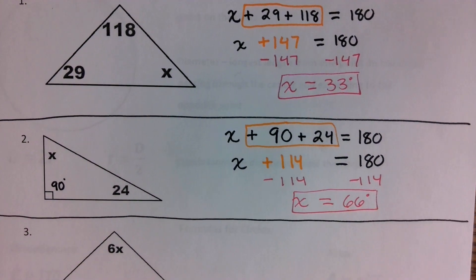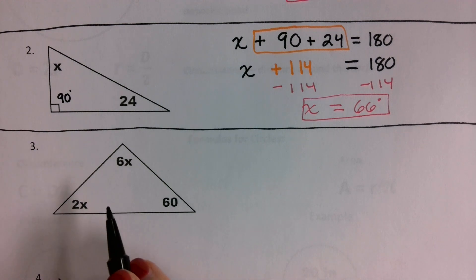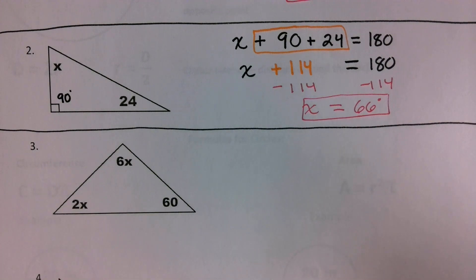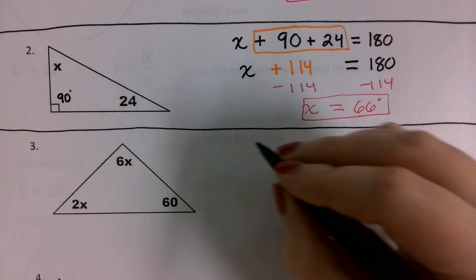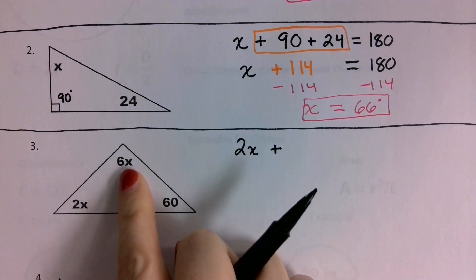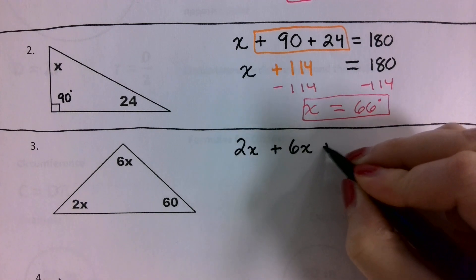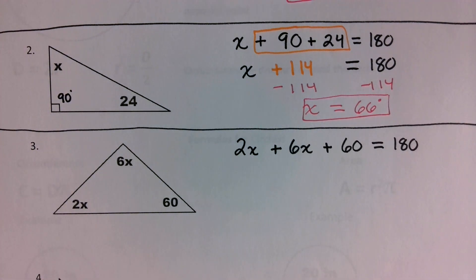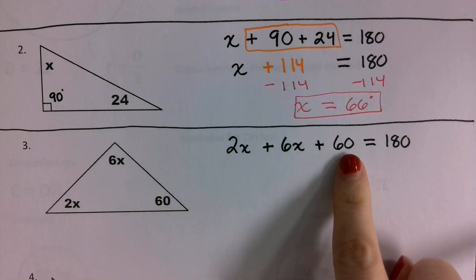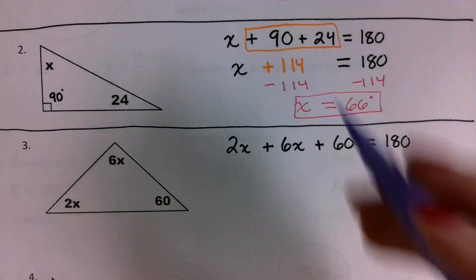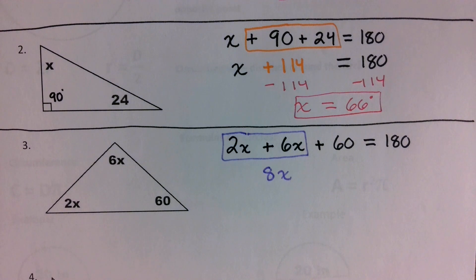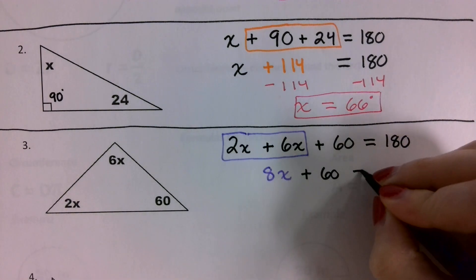For problem number three, it's just a little bit different because we don't have number values for every single angle. Two of these have variable values, but it's solved the exact same way. We're going to take the first angle 2x, add it with the second angle 6x, and add it with the third angle 60, and the whole thing is set equal to 180 degrees. When we combine like terms, we combine the 2x and the 6x together — 2x plus 6x is 8x. So we get 8x plus 60 is equal to 180.